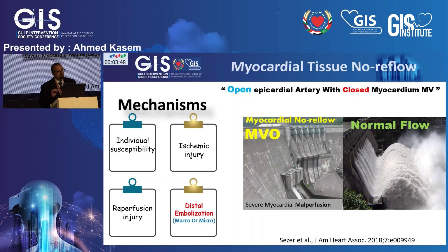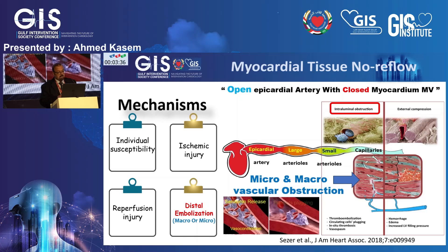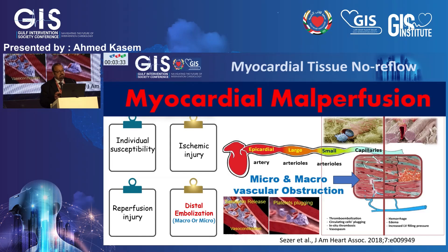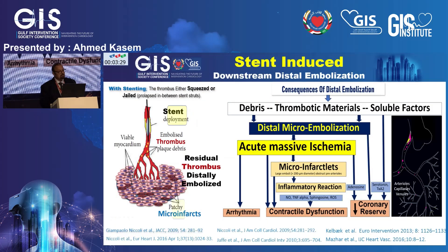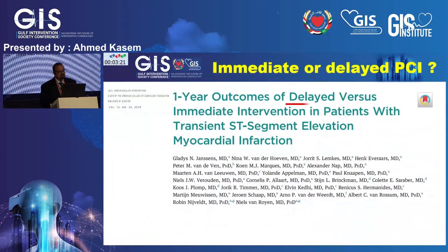Regarding myocardial tissue no-reflow phenomenon: it represents an open epicardial artery with closed microvasculature in the myocardium. It is multifactorial, but the most important factor in the acute setting is distal embolization — either macro or micro — causing myocardial malperfusion, and the sequelae of malperfusion include patchy microinfarction, arrhythmia, and cardiogenic shock.